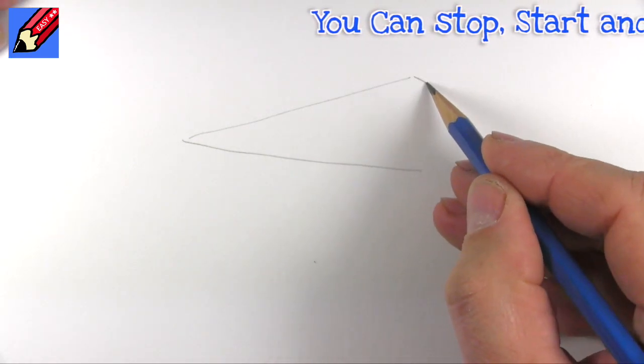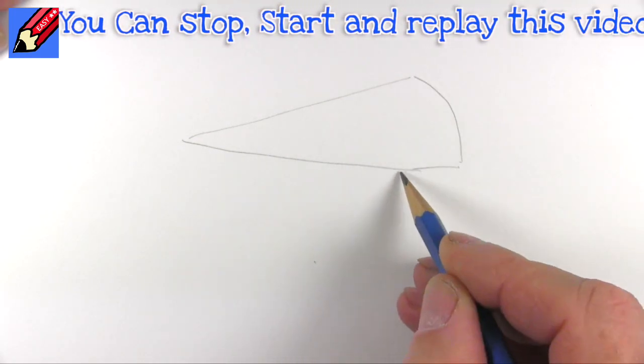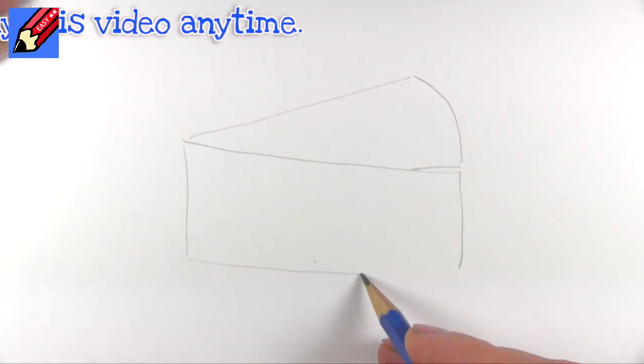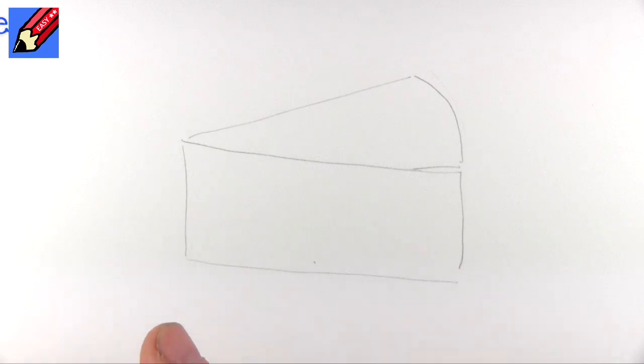And we start off with a kind of triangle-y shape and then we're going to want a curve at the end, straight down, straight down and across. And this is our plan for a piece of cheese.